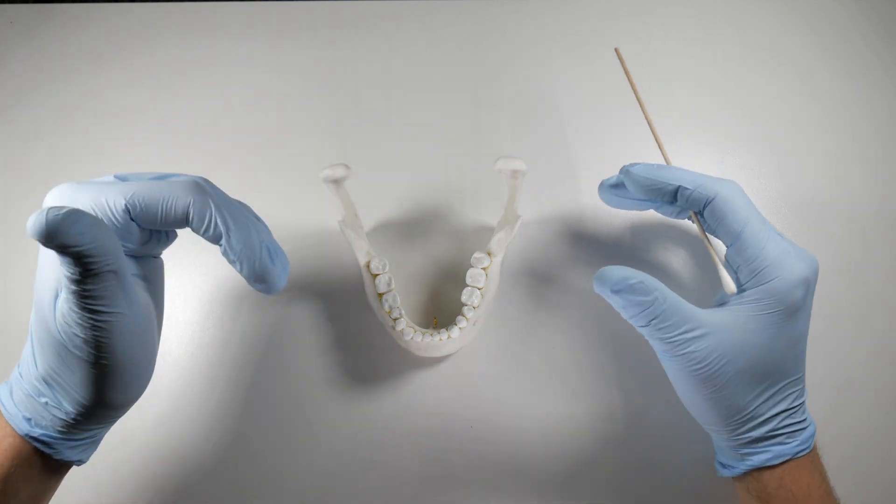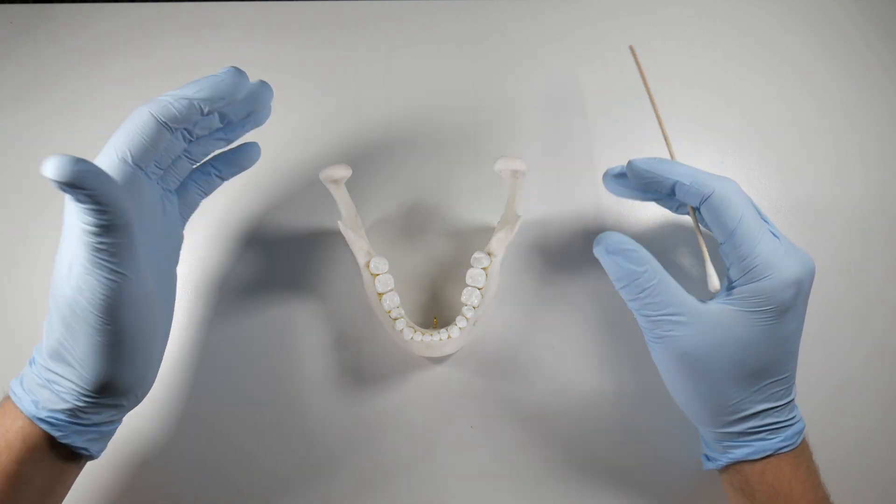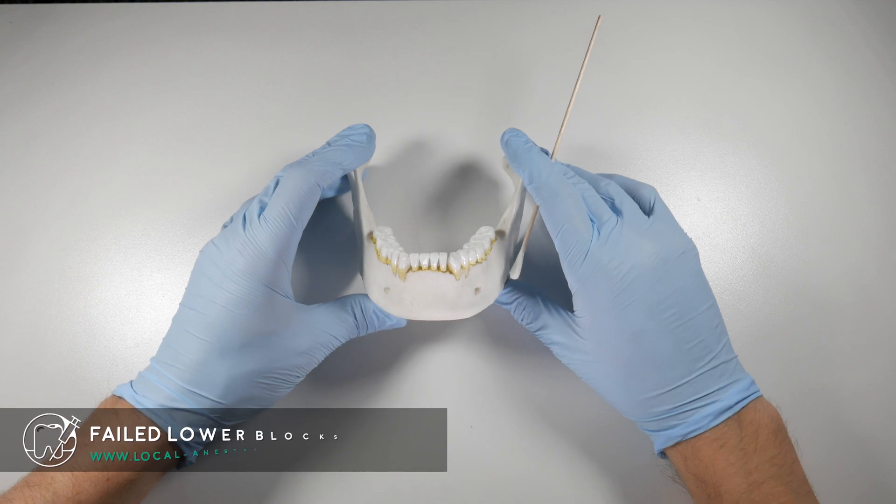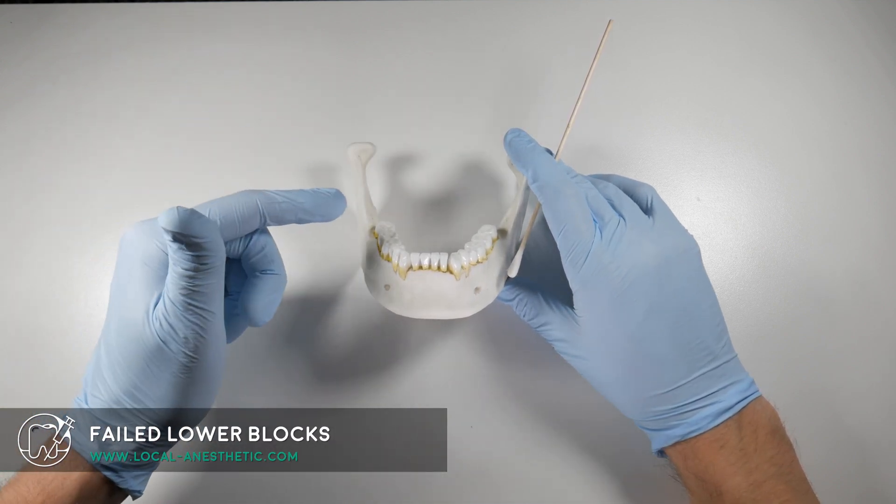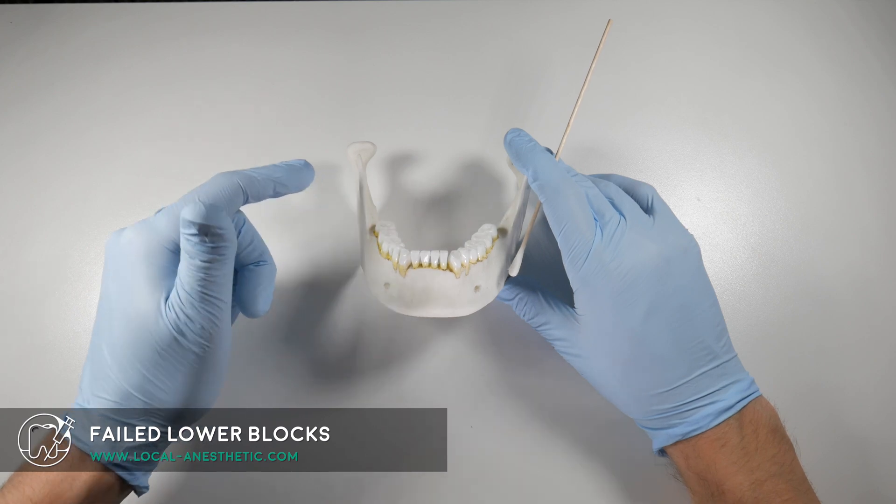One of the most inconsistent and yet most used blocks in dentistry is the inferior alveolar nerve block. In this video we're going to give you some tips on how you can improve your chances for success the next time that you do this injection.